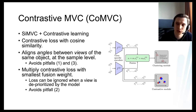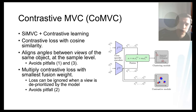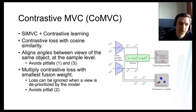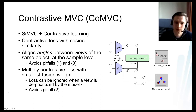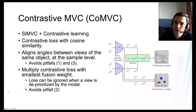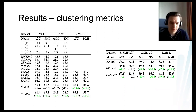We add this contrastive loss to the total clustering loss, but we multiply it by the smallest fusion weight. This allows the network to effectively disable contrastive learning when one view is very uninformative: if a view is essentially random noise, its fusion weight becomes very small, disabling the alignment altogether and preventing the noisy view from degrading the fused representation.